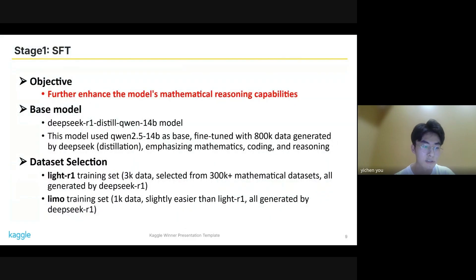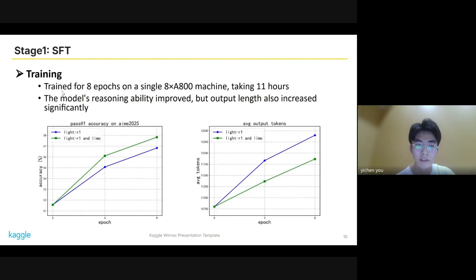In Stage 1, we applied SFT to further enhance the model's mathematical reasoning capabilities. We chose DeepSeek R1 14B distilled model as a base model and used a dataset combined from NAS-R1 and IMO. Both of them are high-quality responses for hard math problems generated by DeepSeek R1. After training up to eight epochs on a single A800 machine, which took 11 hours, the model's reasoning ability improved.